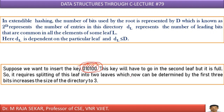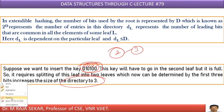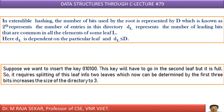Now, if you split, what happens can be determined by the first three bits — increase the size of the directory to three. Actually, initially the size of the directory is two, and that will be increased to three. In the next slide, you can understand so nicely.